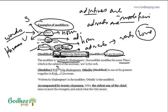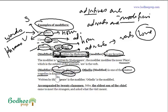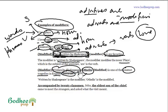'Written by Shakespeare, Othello is one of the greatest tragedies in English literature.' There are many modifiers here. The word 'greatest' modifies the noun 'tragedies,' the adjective 'English' modifies 'literature,' and 'Othello' also has a modifier — the phrase 'written by Shakespeare.' So 'written by Shakespeare' is the modifier and 'Othello' is the modified.